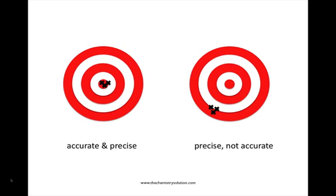Looking at the example on the right, the X's are precise because they're all close to each other, but not accurate because they missed the bullseye of the target.